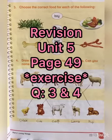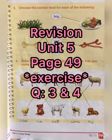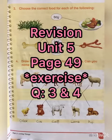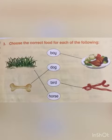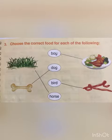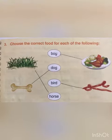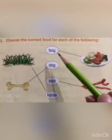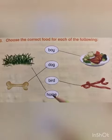Assalamualaikum. Today we are going to revise page number 49 of Unit 5, Animals and How Do They Live, questions number 3 and 4. This is a revision video, so students who have not completed the exercise must complete it with me, and those who have done it must revise. There are four living beings — boy, dog, bird, and horse — mentioned in question number three.